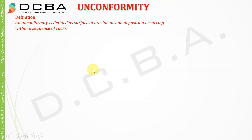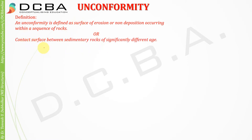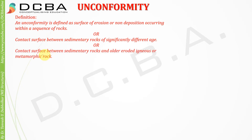In this video lecture, we'll be starting with the new topic of unconformity. An unconformity is defined as a surface of erosion or non-deposition occurring within a sequence of rocks. The second definition states it is a contact surface between sedimentary rocks of significantly different age. The third definition is a contact surface between sedimentary rocks and older eroded igneous or metamorphic rocks.